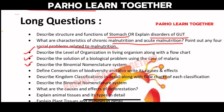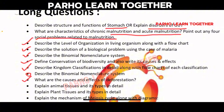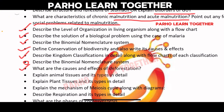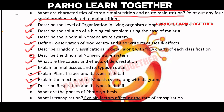Define the conservation of biodiversity, including its causes and effects. Describe the kingdoms along with a flowchart of each classification. Describe the binomial nomenclature. What are the causes and effects of deforestation — what causes the damage and what effects does it have on the atmosphere?